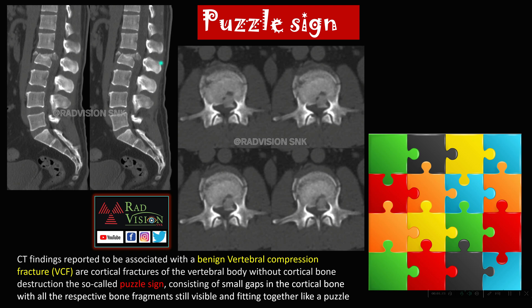Next is the Puzzle Sign, seen in benign vertebral compression fractures. You can see there are multiple gaps between the fracture fragments, but all these multiple fracture fragments are still visible and fit together. This mimics a puzzle, where multiple components align to form the complete picture. Here, multiple small gaps in the cortical bone are present, but the fragments still fit together like a puzzle. This classical Puzzle Sign helps differentiate benign from malignant vertebral compression fractures.